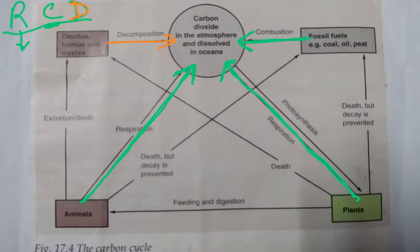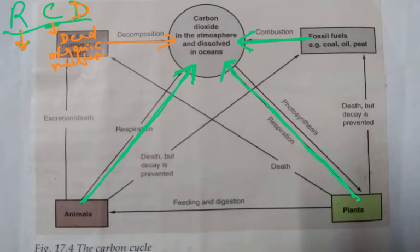And when dead organic matter is decomposed — dead trees, dead leaves, dead birds — that organic matter is decomposed and CO2 is returned to the atmosphere. So three processes return carbon dioxide to the atmosphere: R — respiration; C — combustion; D — decomposition.